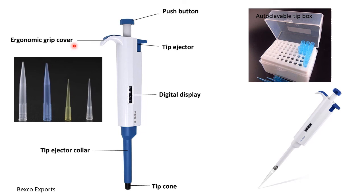There is an ergonomic grip cover so you can hold it towards your thumb and work conveniently. To remove the tip, there is a tip ejector and tip ejector collar — when you push the tip ejector, this collar moves down and pushes the tip off the pipette. The tips fit on the tip cone and they come in an autoclavable tip box where you can fill in all the micro tips and autoclave them. The tips are autoclavable, but not the micropipette itself.